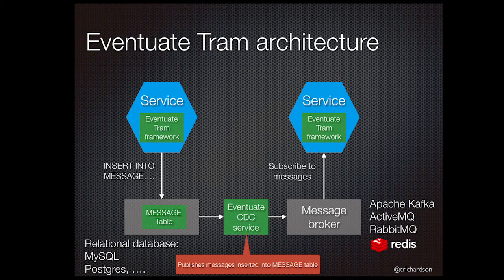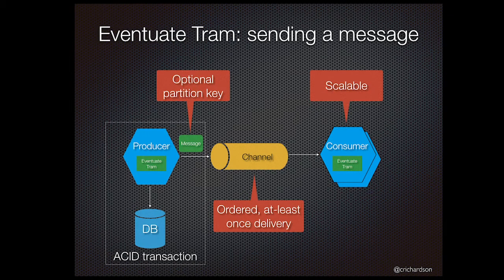This slide shows the architecture of an Eventuate Tram application. Services are written using the Eventuate framework. A producer sends a message using Eventuate Tram, which inserts the message into a message table. The Eventuate CDC service reads the message from the message table and publishes it to the message broker. A consumer service uses Tram to consume messages from the message broker. A producer service uses the Tram framework to publish a message as part of an ACID database transaction using the transactional outbox pattern. The message channel implements ordered at-least-once delivery, and Tram implements these features using the capabilities of the underlying message broker.